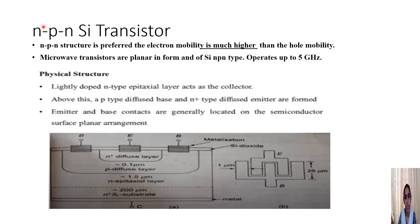When speaking about the structure of the microwave transistor, we usually prefer an NPN structure since electron mobility is higher than hole mobility. The operating frequency is typically up to 5 GHz. Here we consider a planar silicon NPN transistor.